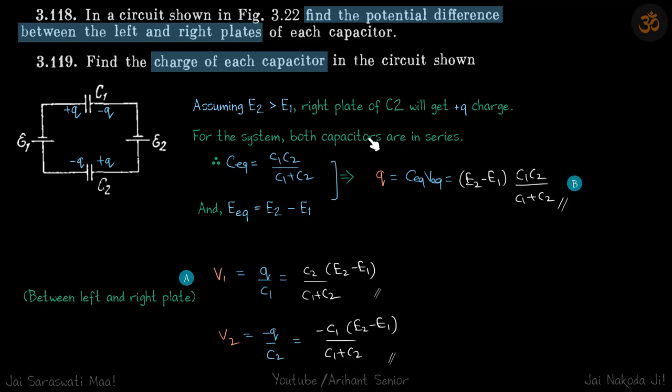For the system, both capacitors are in series and both batteries are also in series. The equivalent capacitance is C1C2/(C1+C2) and the equivalent EMF is E2 minus E1, oriented in reverse.